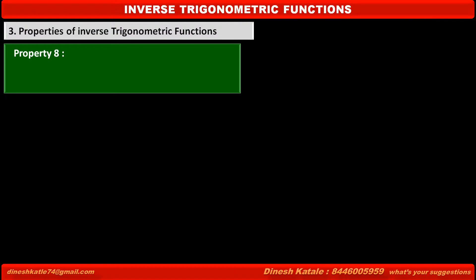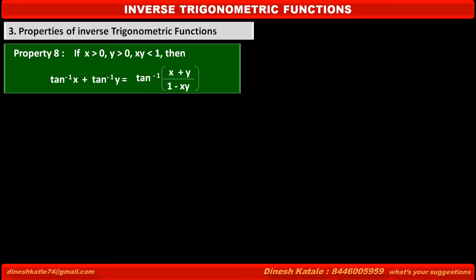We have to prove property 7. If x is greater than 0, y is greater than 0, and product xy is less than 1, then tan inverse x plus tan inverse y is equal to tan inverse of (x plus y) upon (1 minus xy).